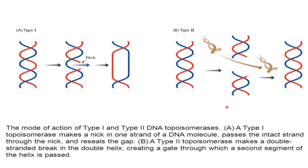Regarding the mode of action: a Type 1 topoisomerase makes a nick in one strand of the DNA molecule, passes the intact strand through the nick, and then releases the gap. A Type 2 topoisomerase makes a double-stranded break in the double helix and creates a gate through which the second segment of the helix is passed.